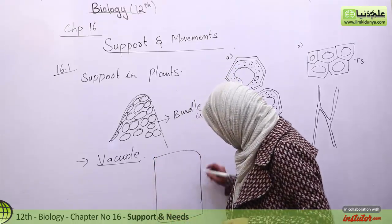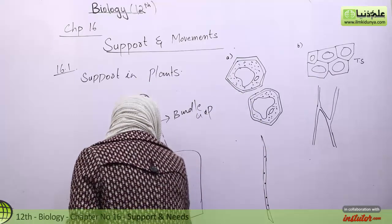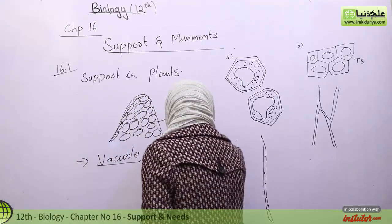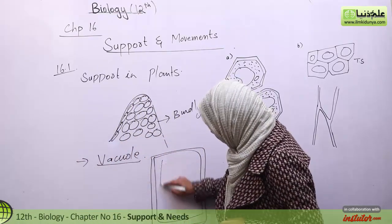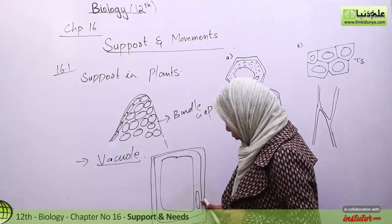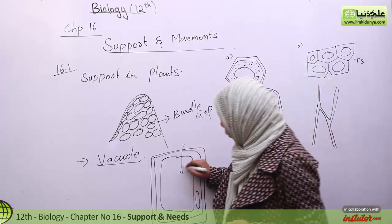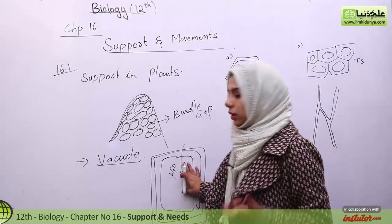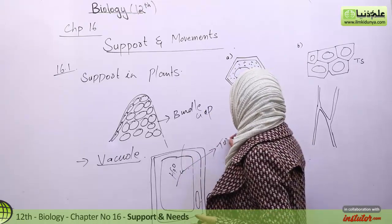The plant cell has a cell wall and a cell membrane as well. It also has a large vacuole. Due to this vacuole, the nucleus is pushed to the side. Basically, this vacuole is a storage of water, and this water storage gives it turgidity.